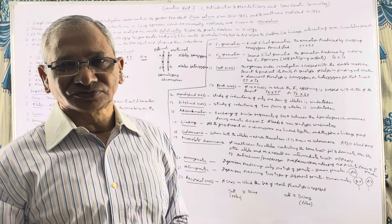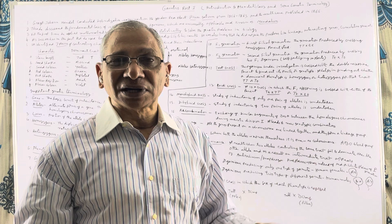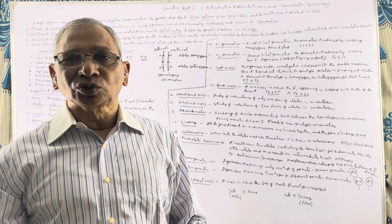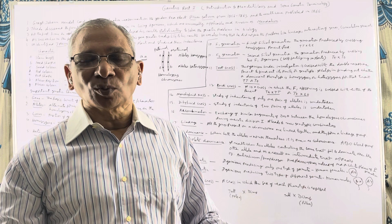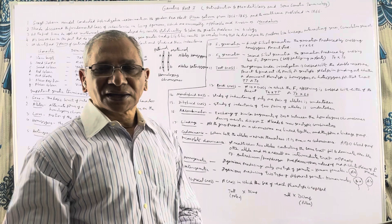F1 plants exhibit hybrid vigor. Hybrid vigor means they grow rapidly, produce larger fruits, yield more fruits, or in animals give more milk and grow faster. Hybrid vigor is exhibited by F1 plants and is also known as heterosis.